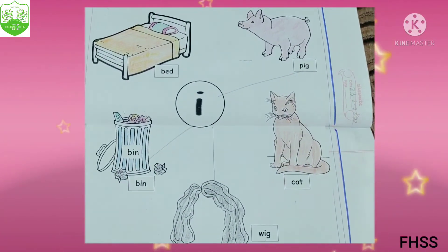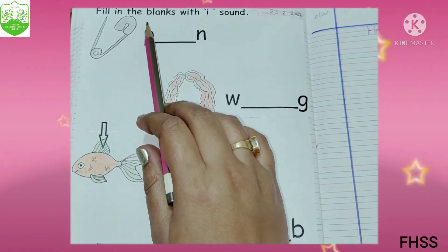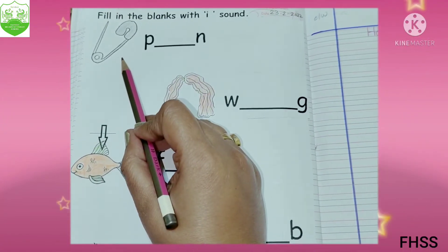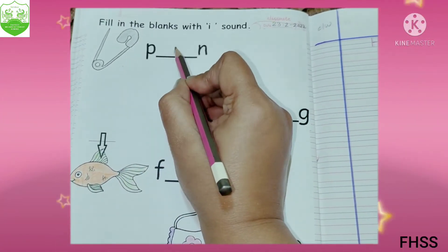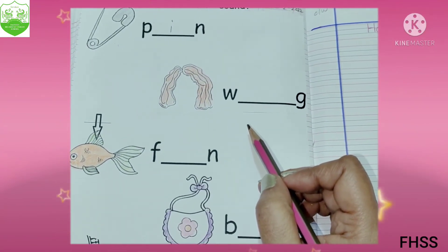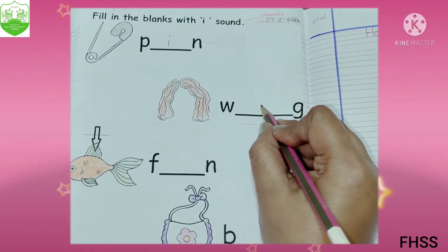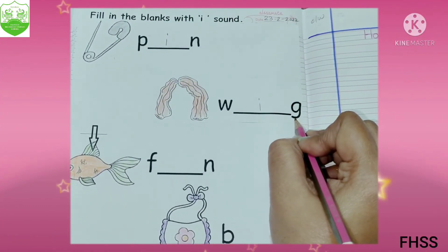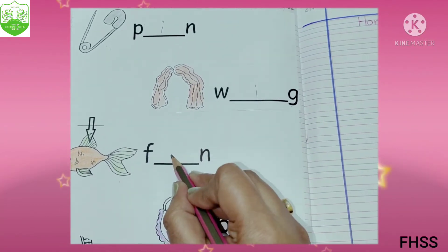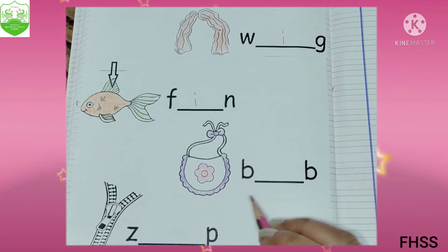Now children, take out the next page. Children, this page. So what we have to do? Fill in the blanks with I sound. We have to write in the middle I. What is the picture? Pin. P, I, N — pin. So sound of I is I. What is this? Wig. W, I, G — wig. Now look here. What is this? Fin. Fin spelling is F, I, N — fin.